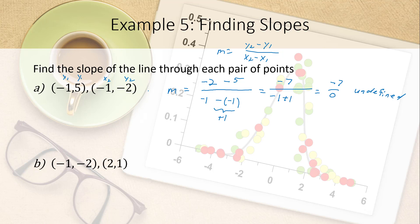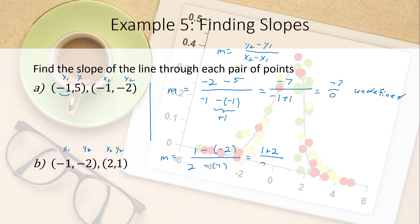Since the slope is undefined, the line must be vertical, passing through x equals negative 1 for all values of y. For the next example with points (negative 1, negative 2) and (2, 1): slope m equals 1 minus negative 2 over 2 minus negative 1, which equals 1 plus 2 over 2 plus 1, which is 3 over 3, so the slope equals 1.